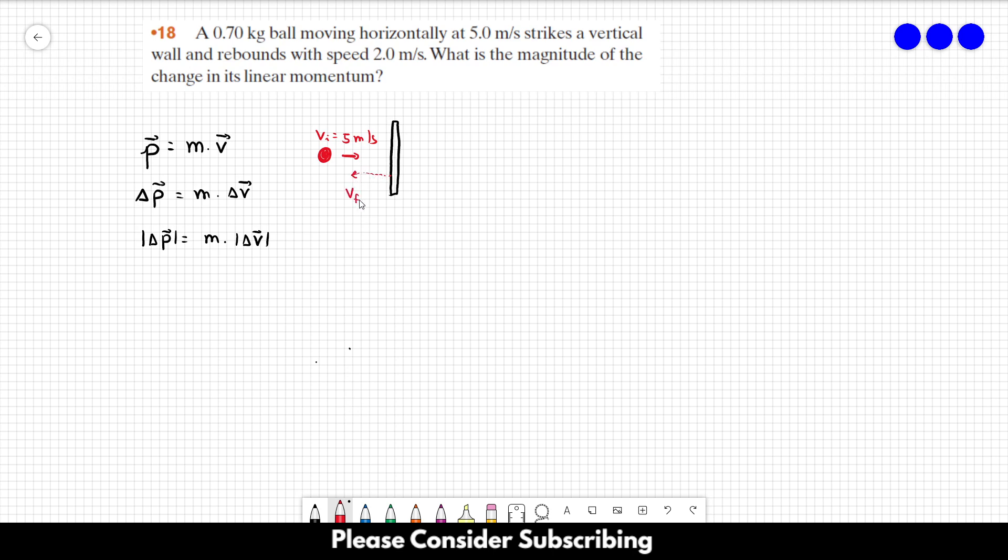With a final speed of 2 meters per second. The point is that the speeds have opposite signs—if this direction is positive, this one is negative. So delta momentum equals...